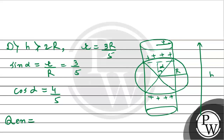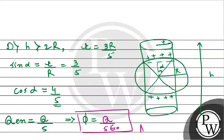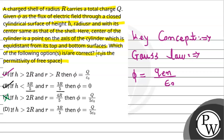The charge enclosed will be Q times (1 minus cosine alpha) = Q times (1 minus 4/5) = Q/5. So the flux equals charge enclosed divided by epsilon naught, which gives Q divided by 5 epsilon naught. Checking Option D: it states Q by 5 epsilon naught, so Option D is correct.